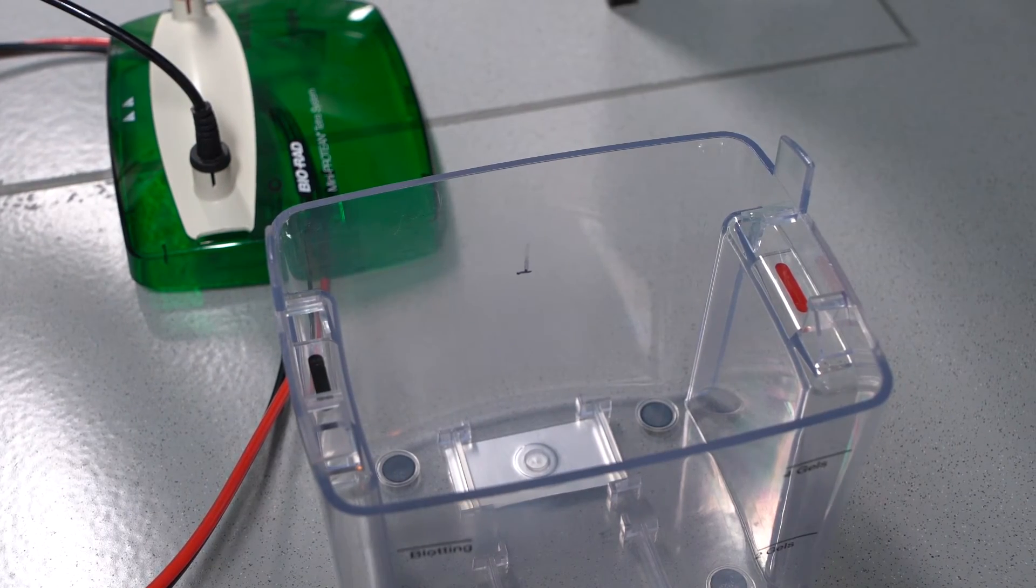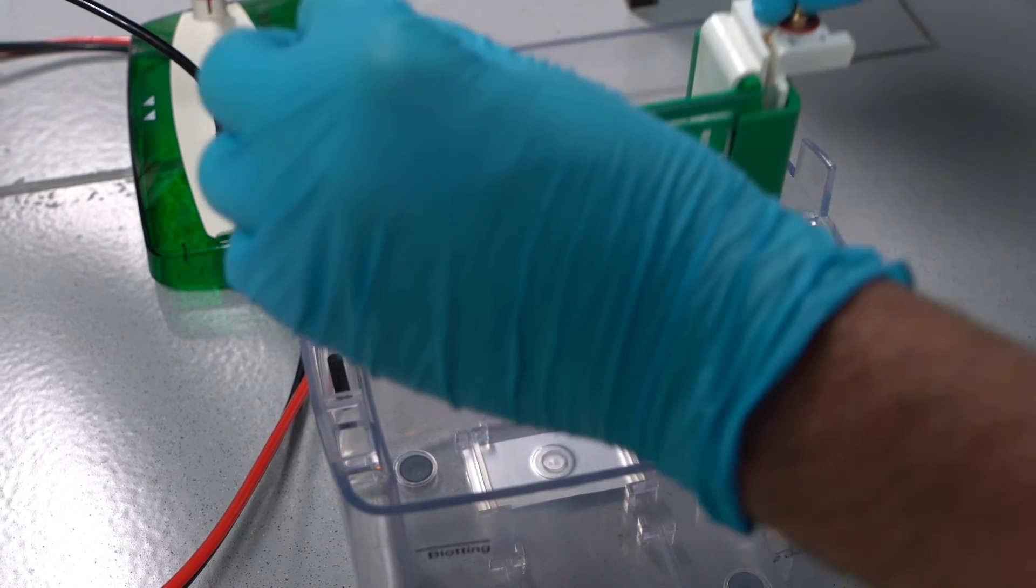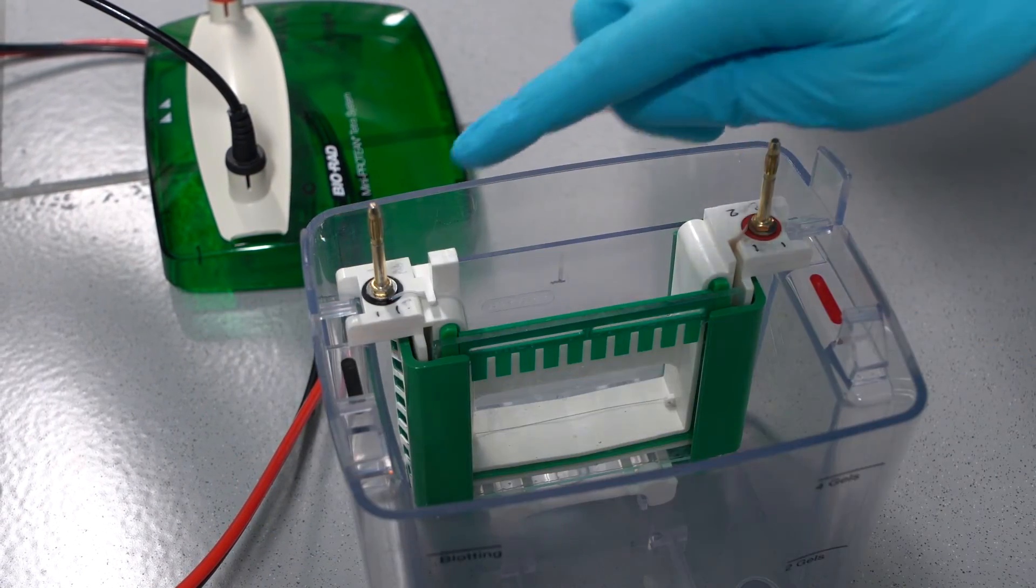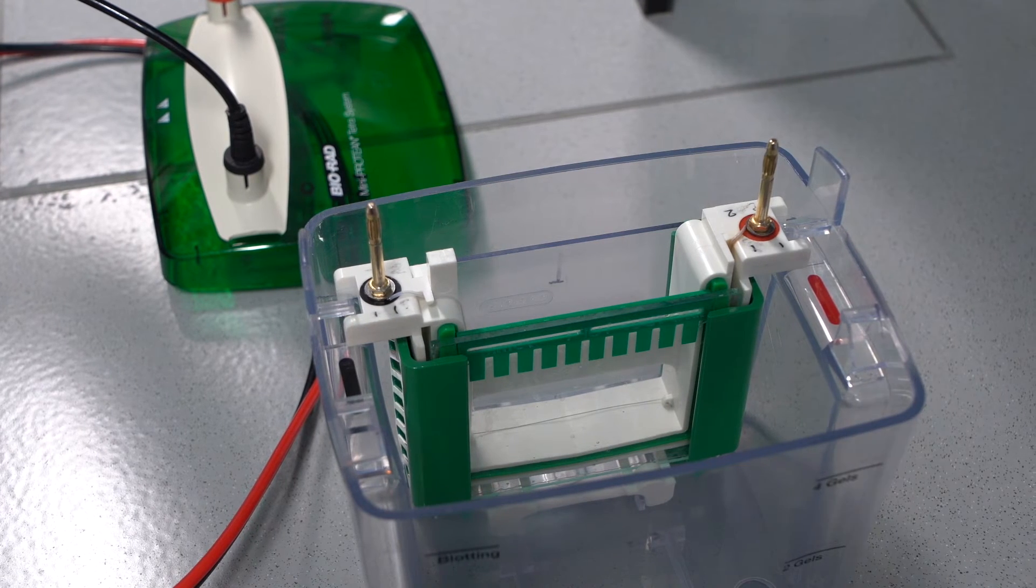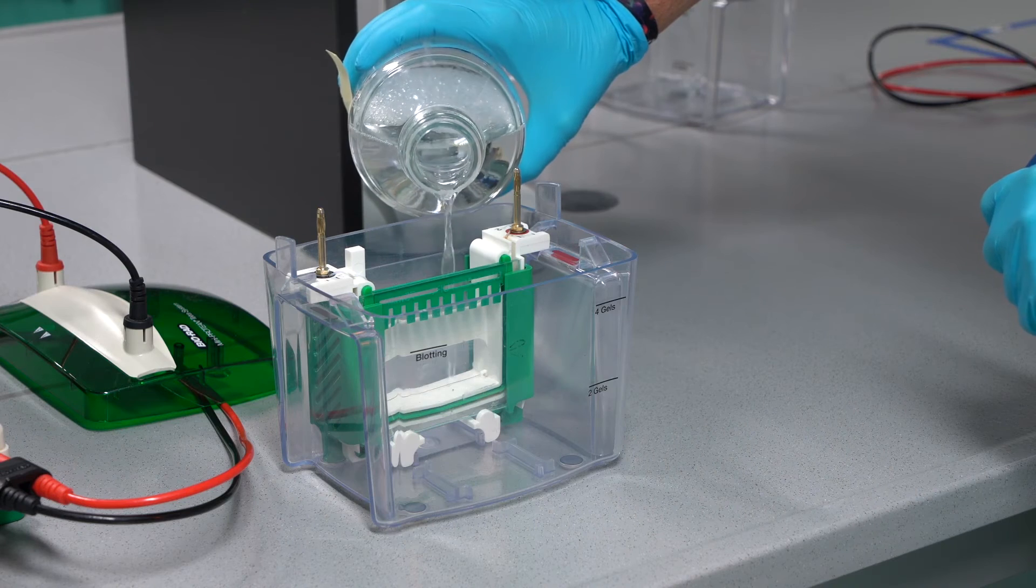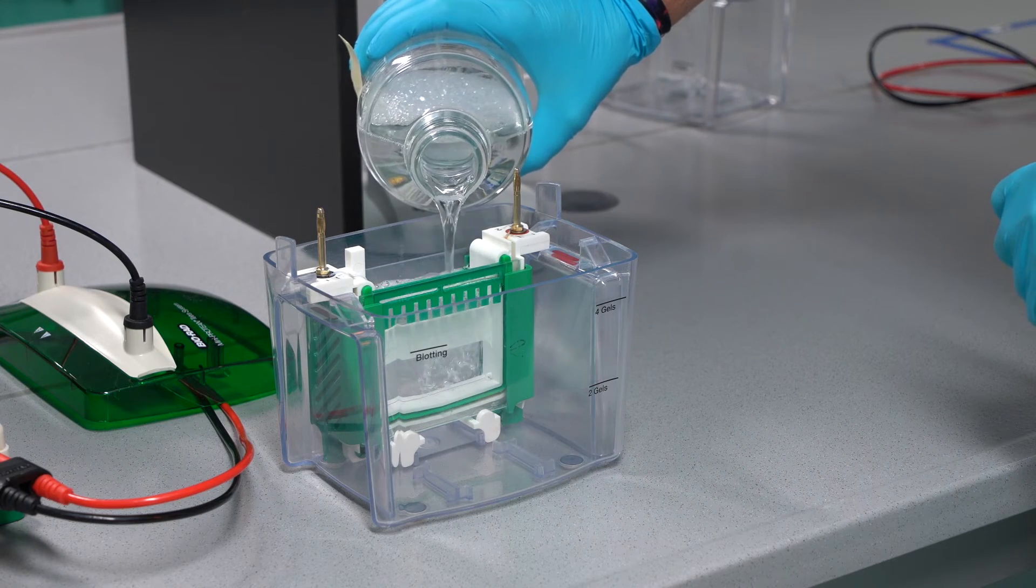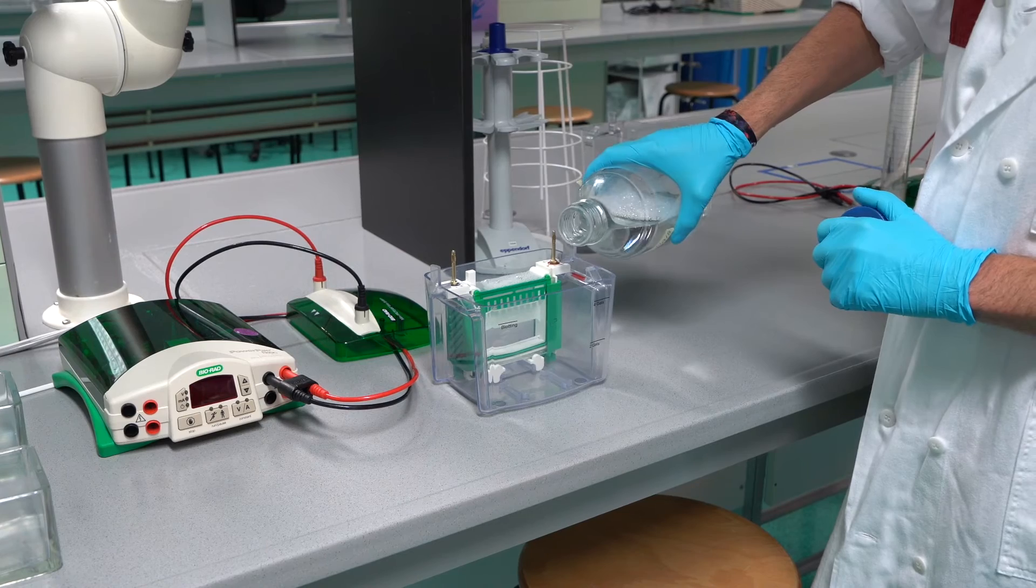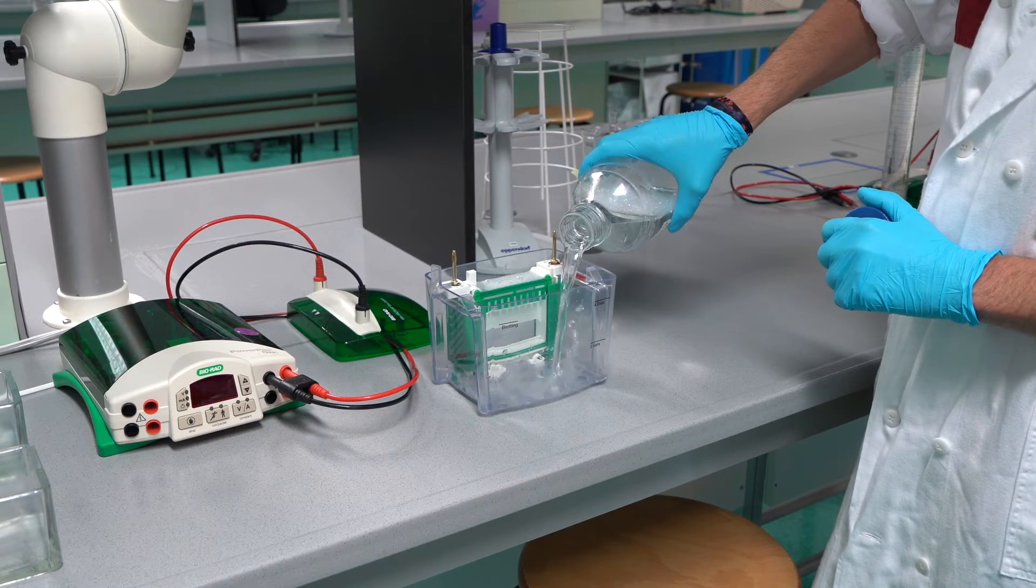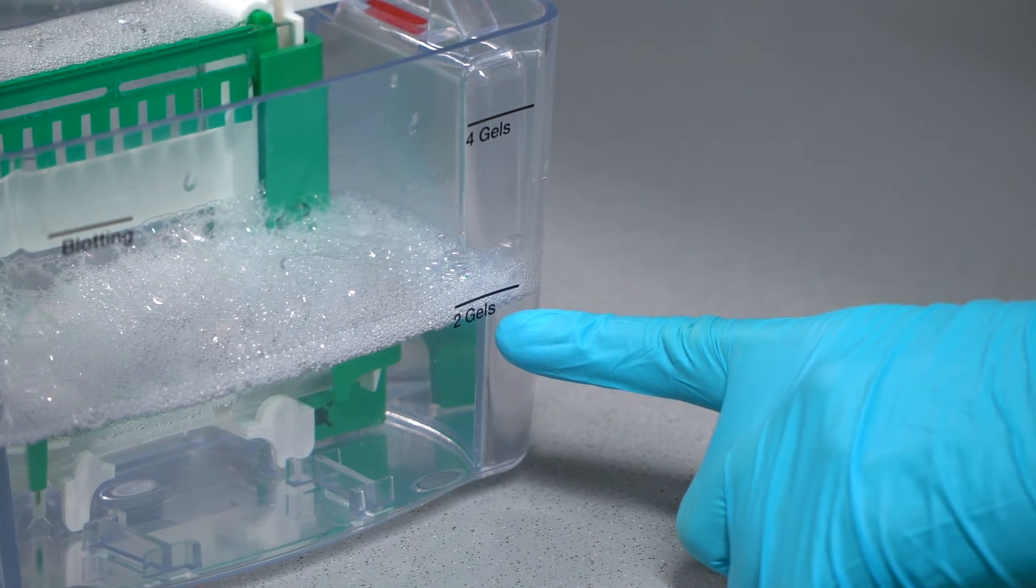Place the frame with the glass plates into the tank. Pay attention to the orientation of the frame with respect to the tank. You need to be able to connect the poles. Fill the interior chamber with one times page electrophoresis buffer. Ensure that the buffer level rises above the small short plate. Also fill the container to the mark of two gels. The current can now flow through the gel.